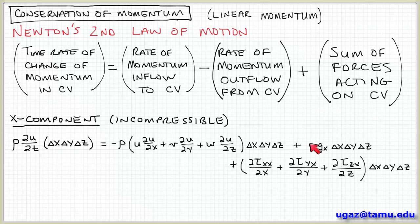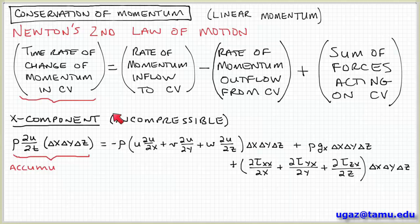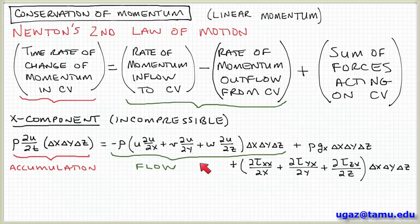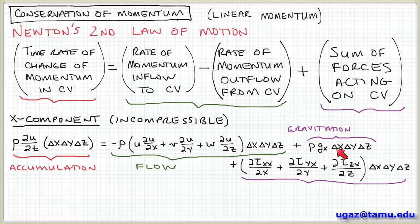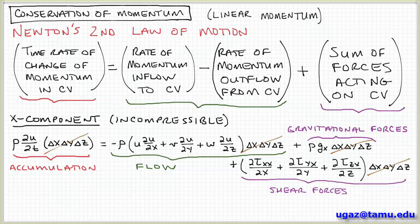Then we add the gravitational body force rho g_x times the volume, plus the shearing forces acting on the control volume expressed in terms of the shear stresses. To clarify: the first term on the left represents accumulation or net rate of change of momentum; the first term on the right is momentum carried by flow; the next two terms represent forces — gravitational body force and shear forces on the fluid element. Notice all these terms are multiplied by the volume delta X delta Y delta Z, so that factor cancels out.